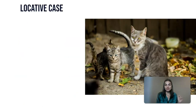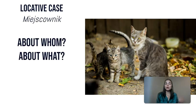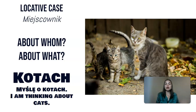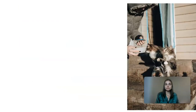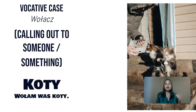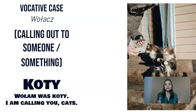The locative case, Miejscownik — 'about whom or about what' — is Kotach. Myślę o kotach — I am thinking about cats. And then the vocative case, Wołacz — when you're calling out to something or someone — is also Koty. Wołam was koty — I am calling you cats. I'm speaking to you cats directly.